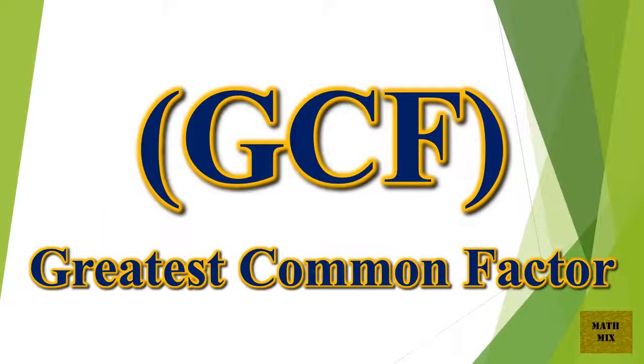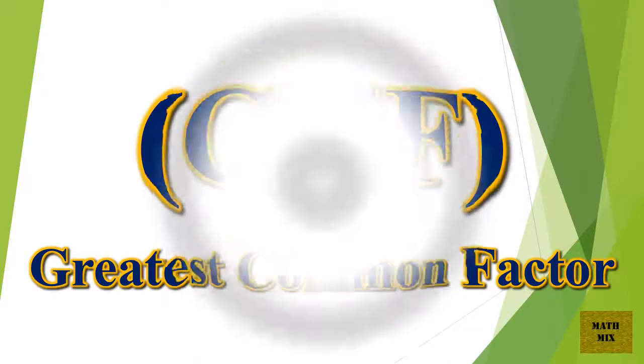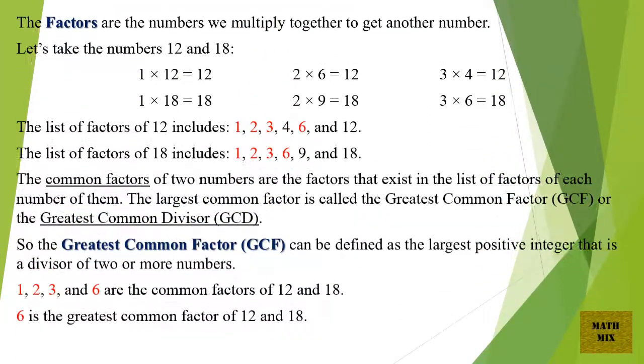GCF, the greatest common factor. The factors are the numbers we multiply together to get another number.